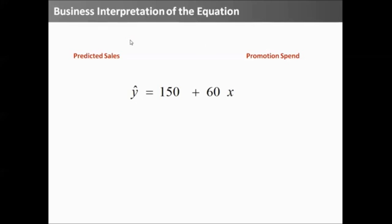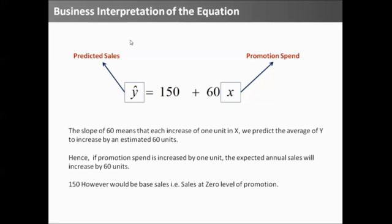But how do we represent this line? y equal to mx plus c is just a mathematical notation. But how do we understand in terms of business? Let's say, we have an equation y equals 150 plus 60 times x, where y is predicted sales and x is the dollars that I spend on promotion. The line represents that 60 would be the incremental sales with unit promotion spent.